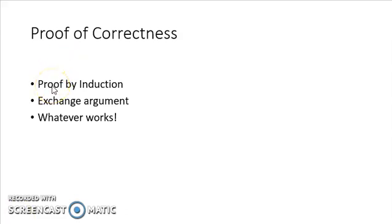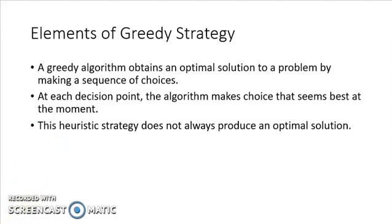One method is proof by induction, which is a mathematical proof. The second one is the exchange argument — in exchange argument you basically give arguments in favor of your solution, and proof by contradiction is the most famous exchange argument. The third option is to use a mixture of the above two techniques. There's no hard and fast rule; you use whatever works for you. Let's first revise the greedy strategy.